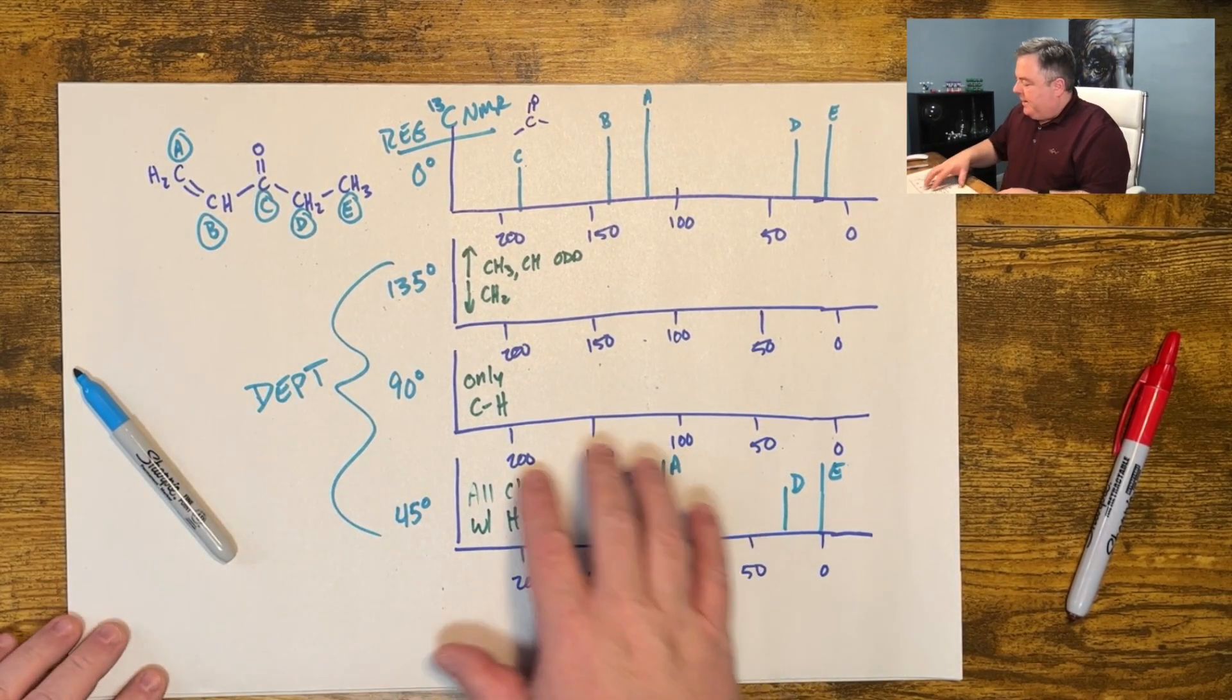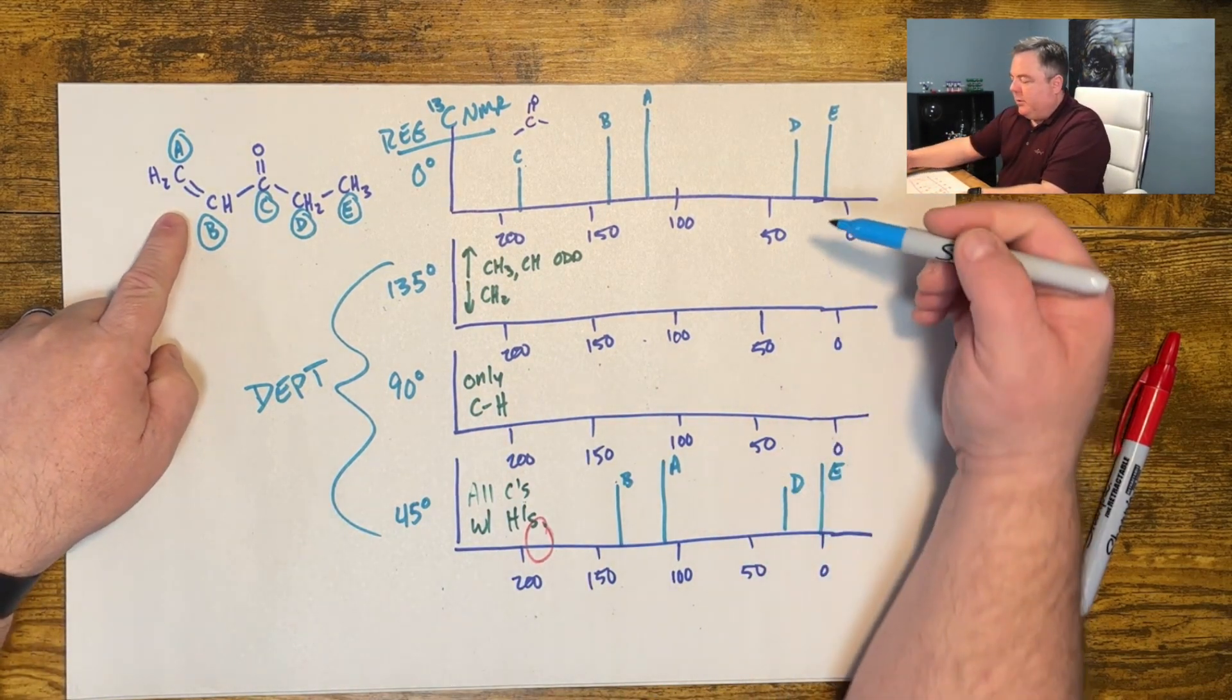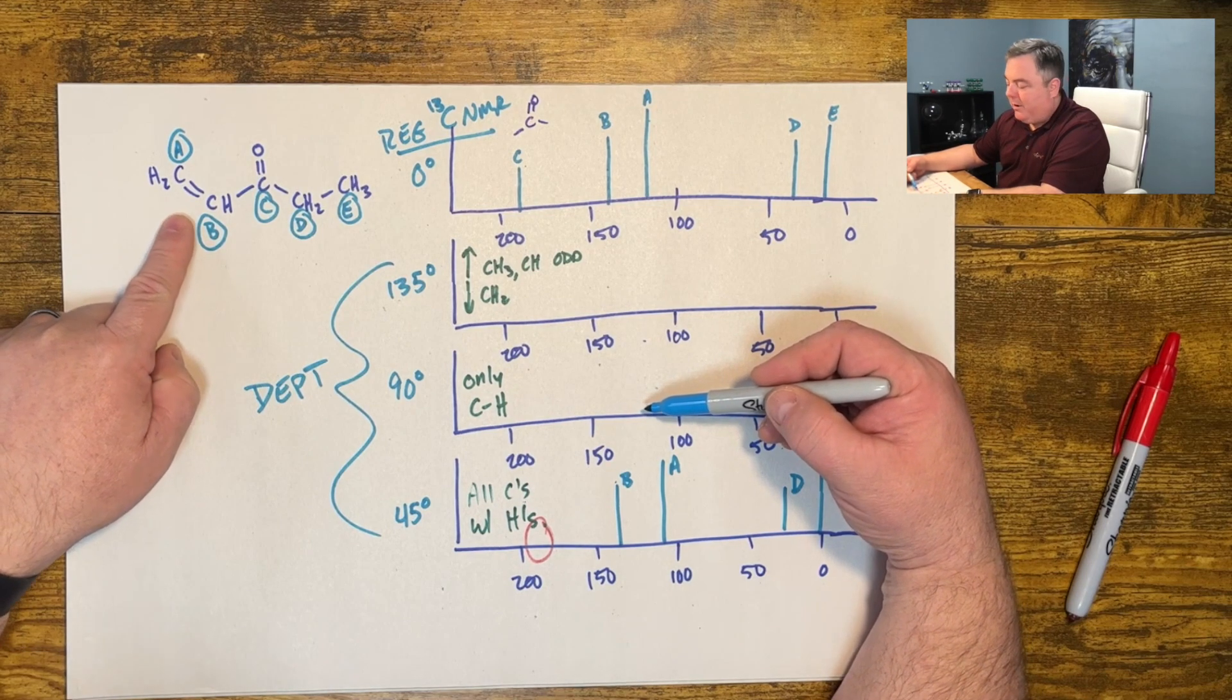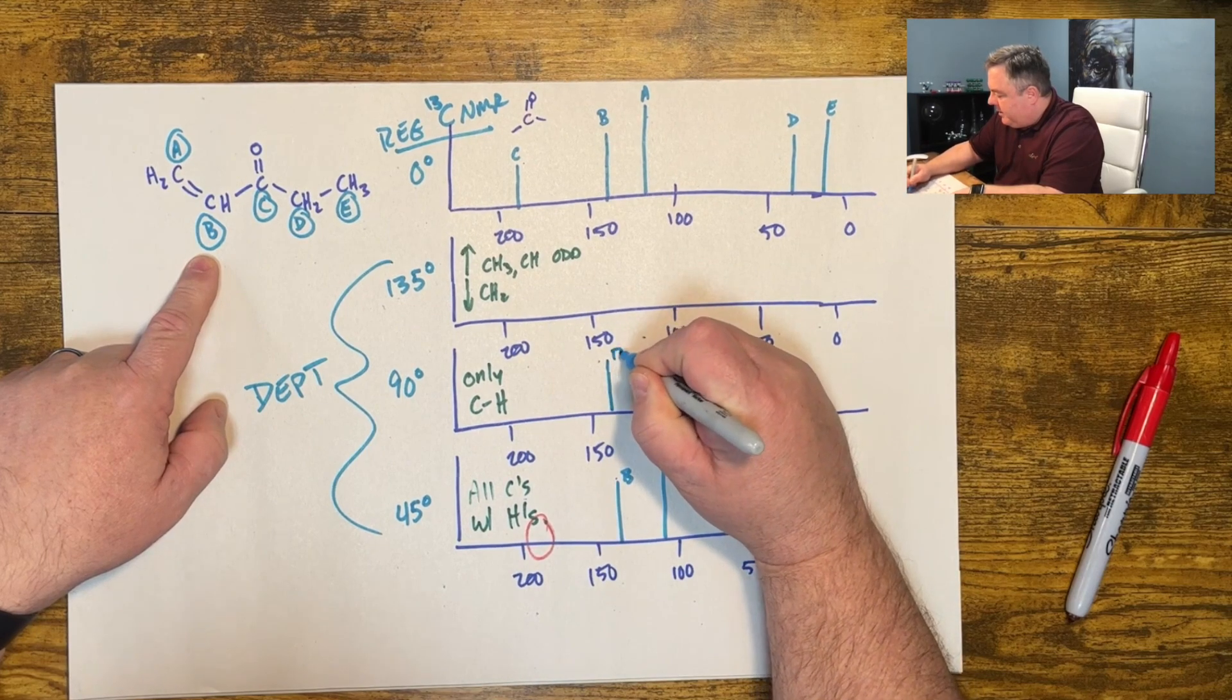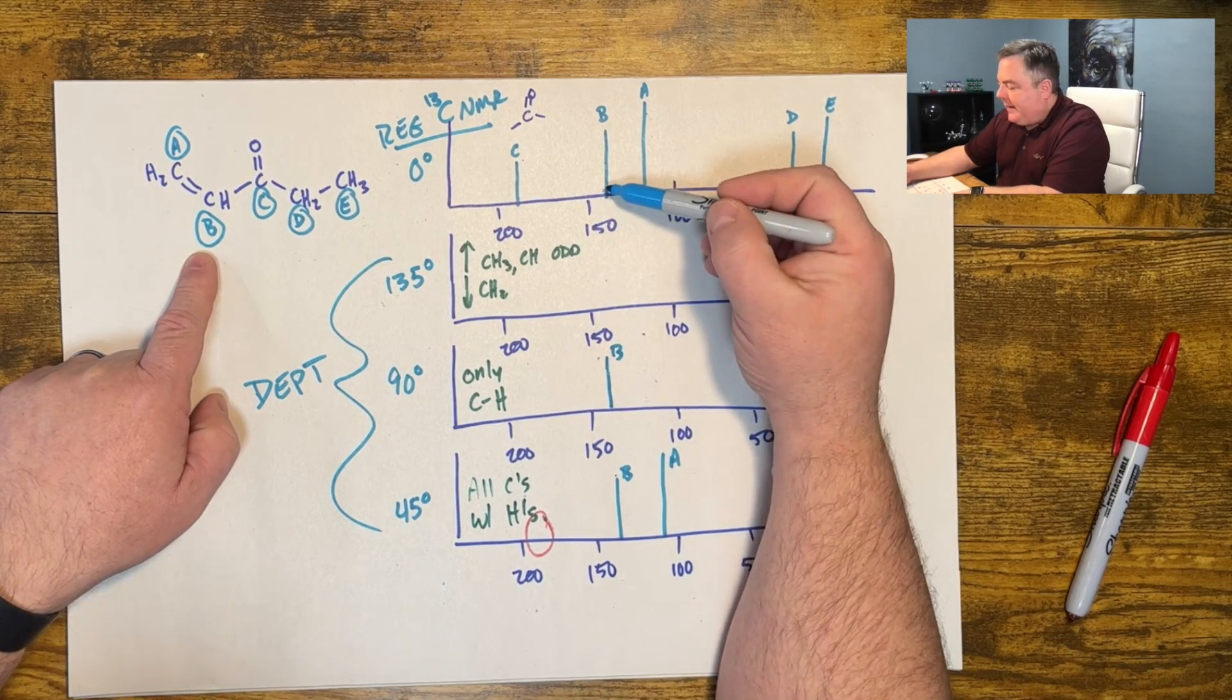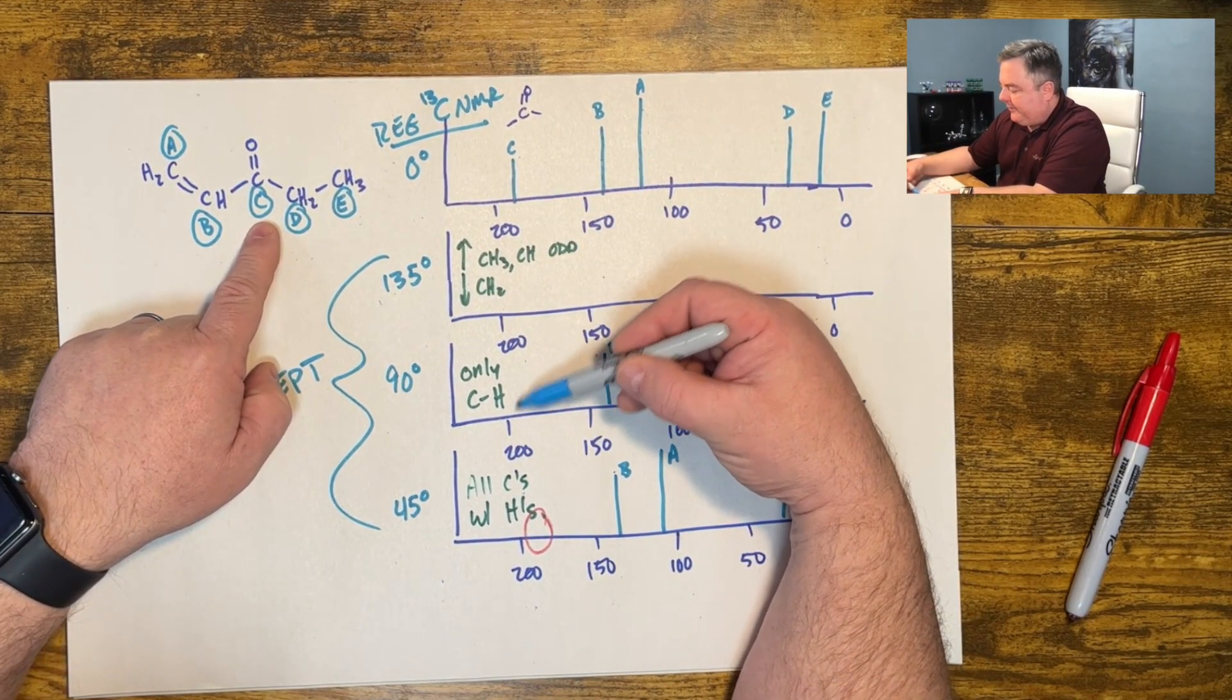This one, only those with one hydrogen show up. So A with a CH2 won't show up because that's two, not one. B with the CH, yes it shows up and all these are in the same location. Hopefully I can line them up. But that's a CH, it shows up.